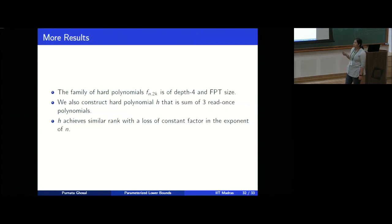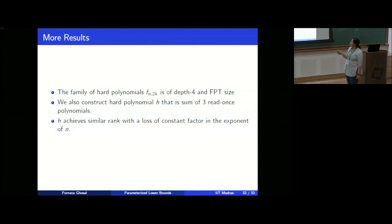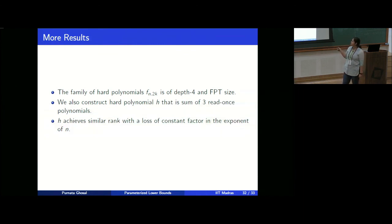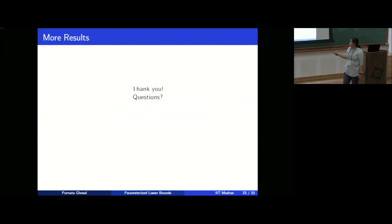Some further results: we also showed a lower bound against another model called strict interval ABPs. It is surprising that this full-rank polynomial has depth-4 and can be computed by an FPT-size circuit, yet it gives lower bounds for multilinear models. We also construct another polynomial H of high rank which is a sum of three read-once polynomials, motivated by the work of Kayal, Nair, and Saha. This polynomial H achieves a similar rank but with n^{Ω(ck)} where there is a constant factor in the exponent.